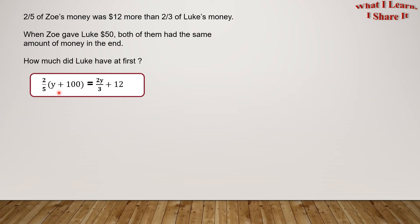When we'll open the parentheses, we'll get 2/5Y plus 2/5 times 100. 2/5 times 100 can be written as 200 over 5, or 40. Let's use it in our equation. Our equation now becomes 2/5Y plus 40 equals 2Y/3 plus 12.